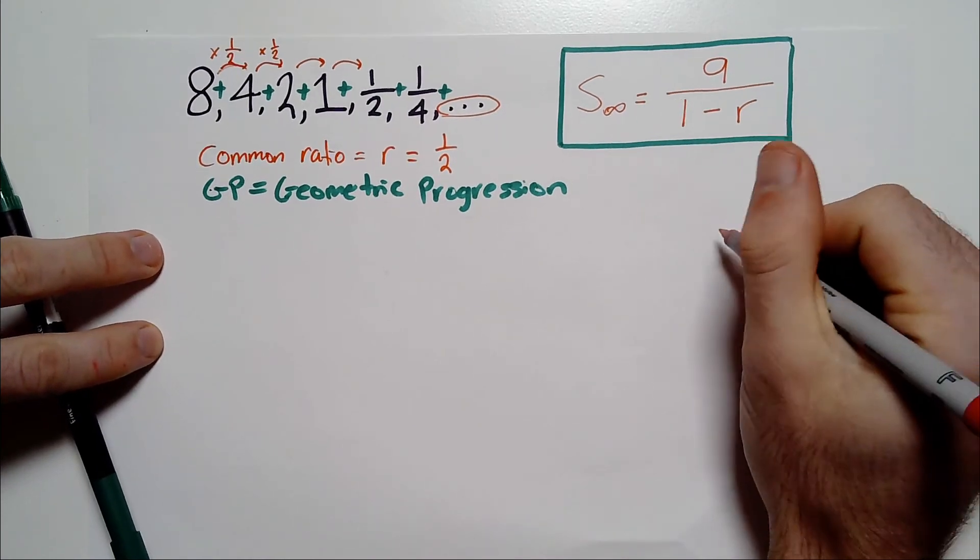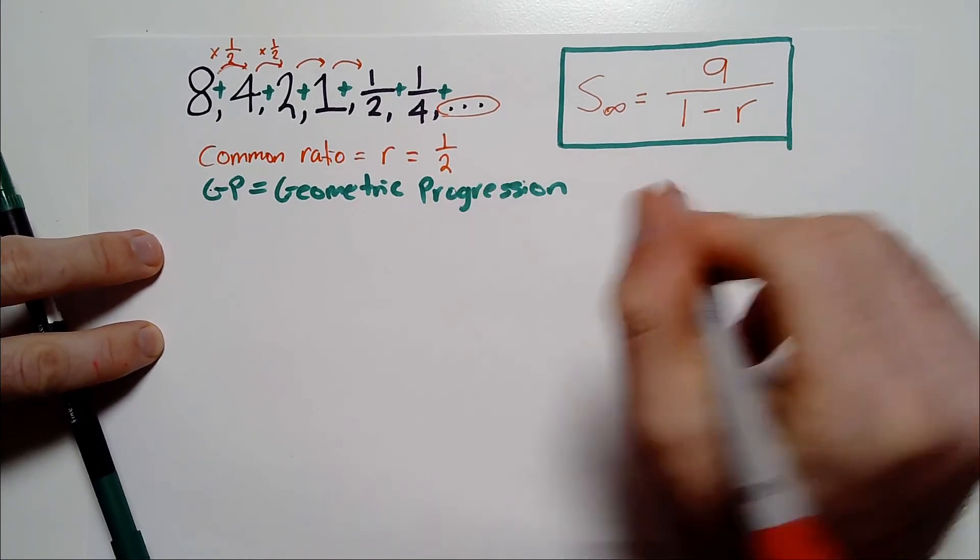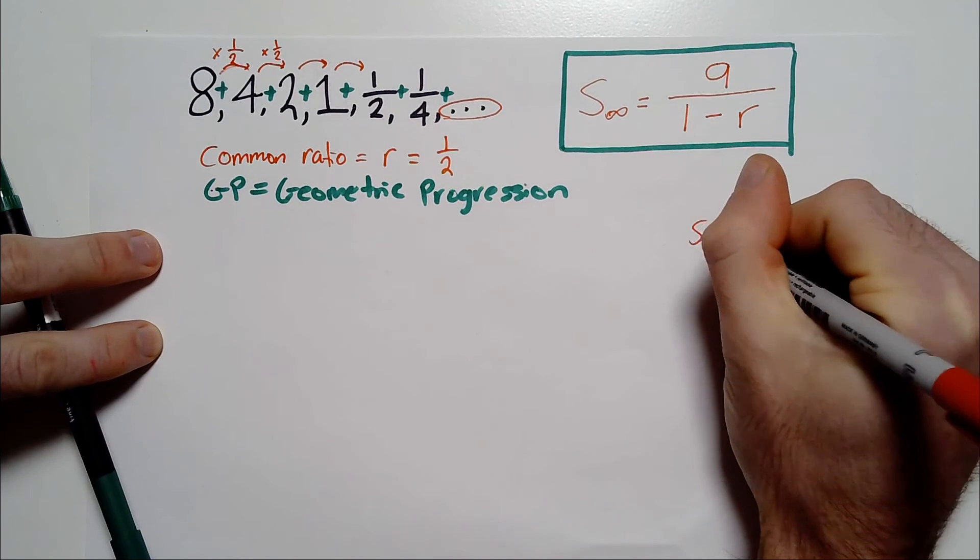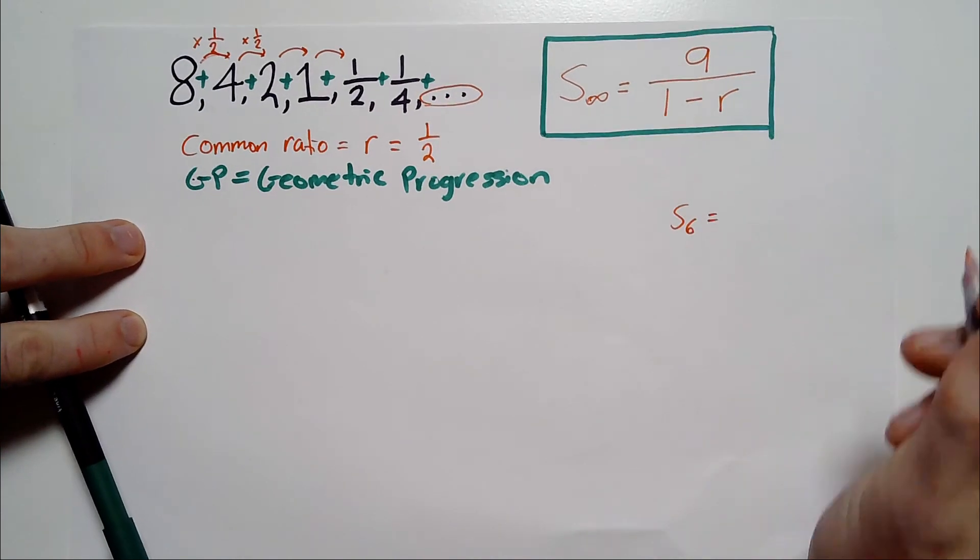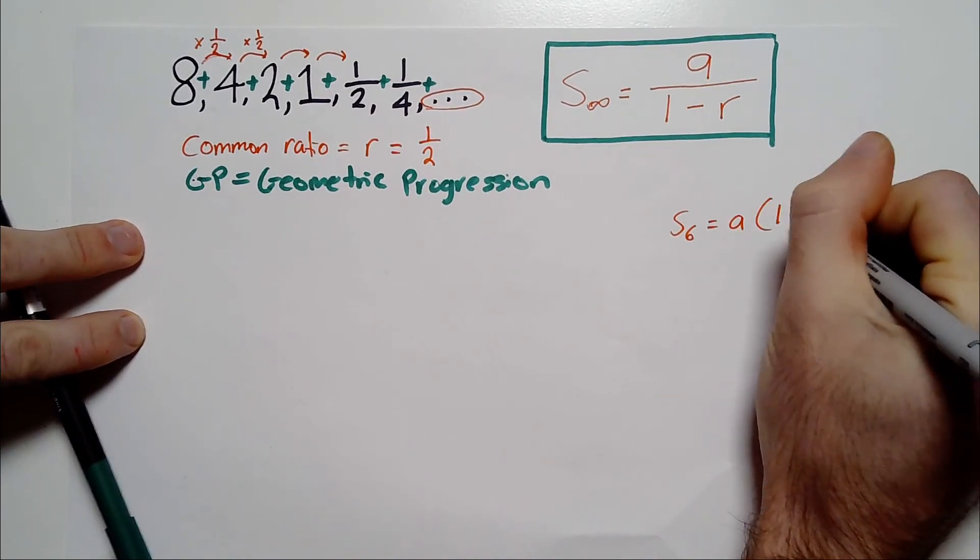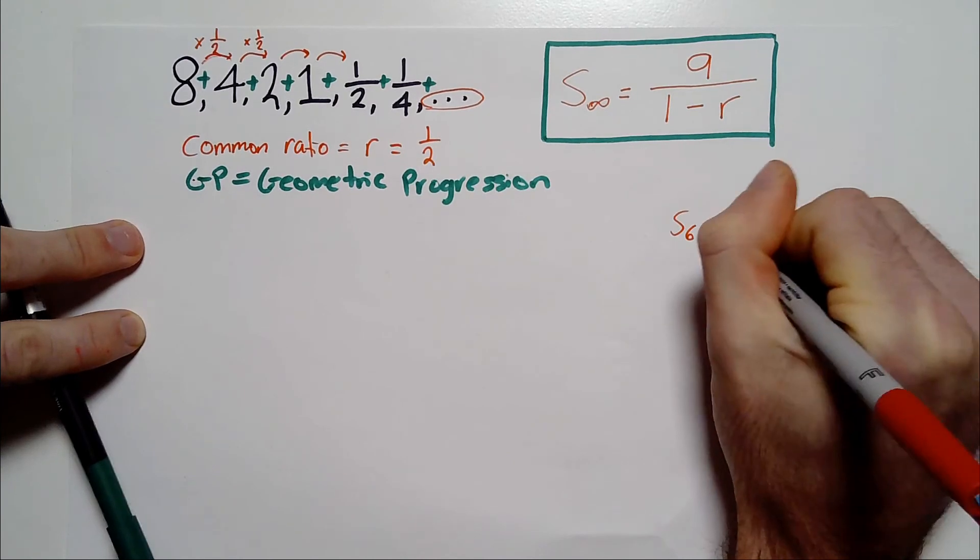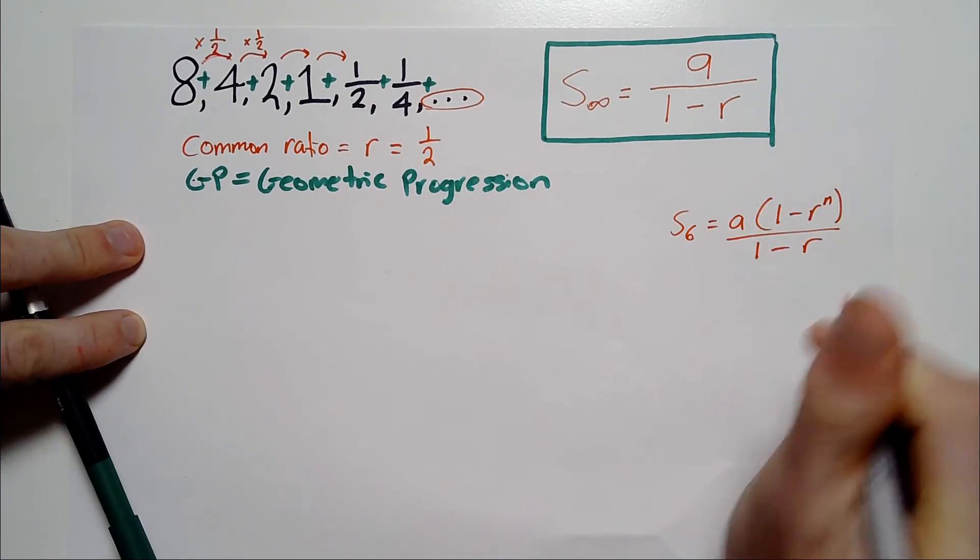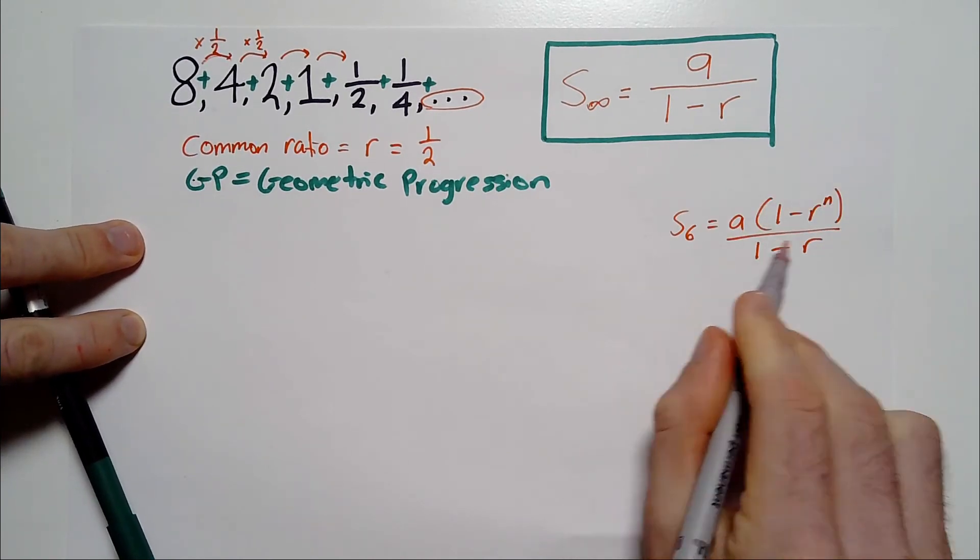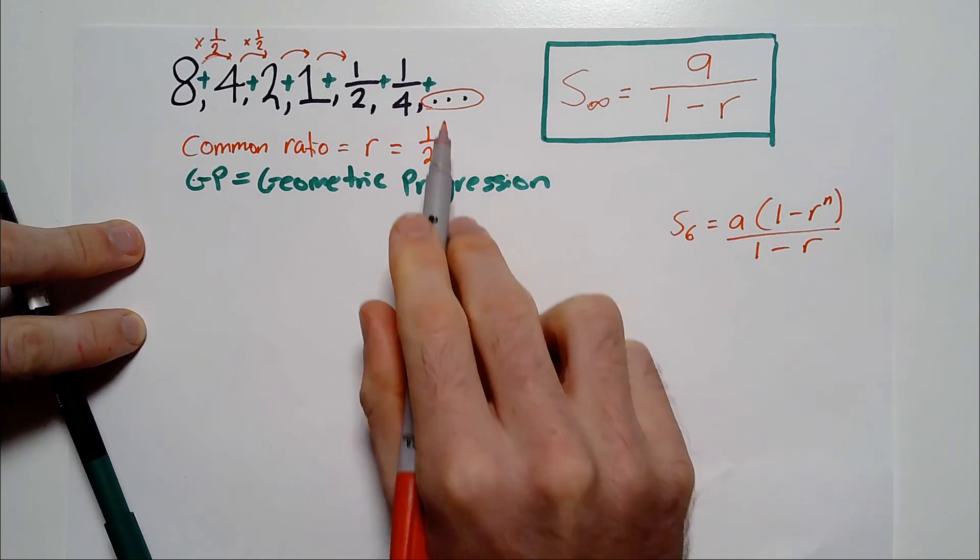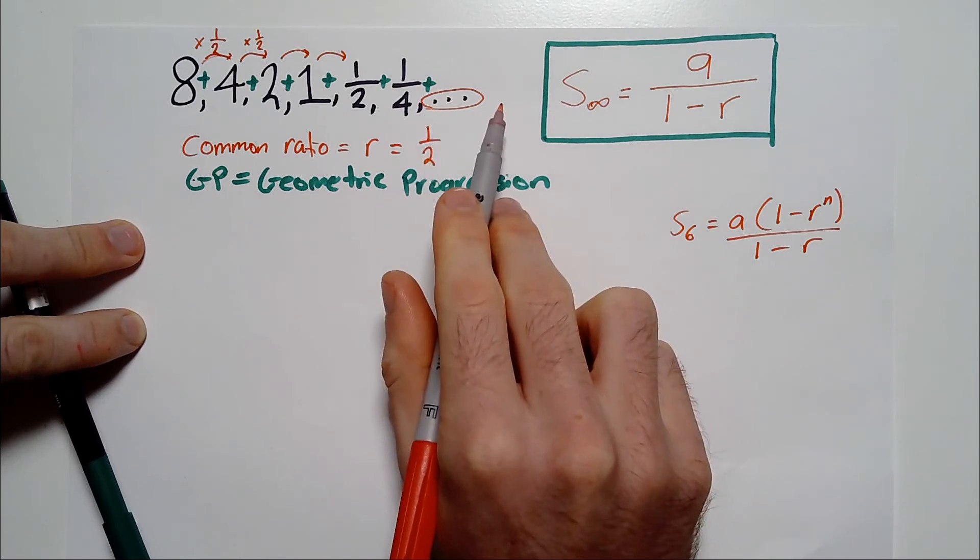And if you can't remember that formula, just to put it over here on the side for you, so if it didn't go forever, for instance, it would be S6 would equal A bracket 1 minus R to the N over 1 minus R. So that's the sum of a GP, where it doesn't go forever.